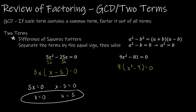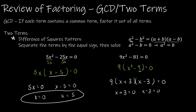The difference of squares pattern says: if you have a perfect square minus a perfect square, that's going to factor into the square root plus the square root, and the square root minus the square root. So what's the square root of x squared? It's x. And what's the square root of 9? It's 3. So now I have factored, and I can use the zero product property to say x plus 3 equals 0 and x minus 3 equals 0, so x equals negative 3 or positive 3.